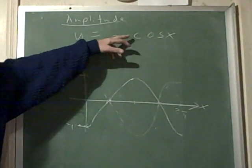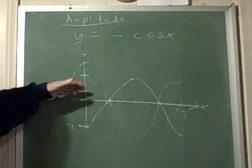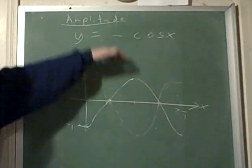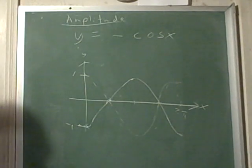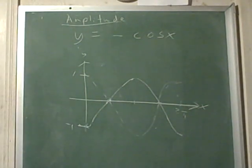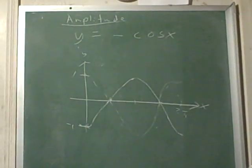So if I had negative two cosine, for example, it would go as low as negative two and as high as positive two, but it would be tipped upside down.